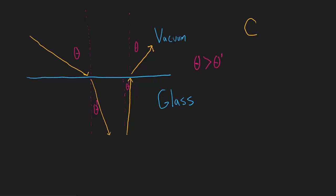One of the ways we can measure this is with a value called the index of refraction, typically written as n. The index of refraction of a given material is equal to the speed of light, c, divided by the velocity of light in that medium. For example, n in a vacuum is just 1, because n equals the speed of light in a vacuum divided by the velocity in a vacuum, which is still c, and that equals 1.